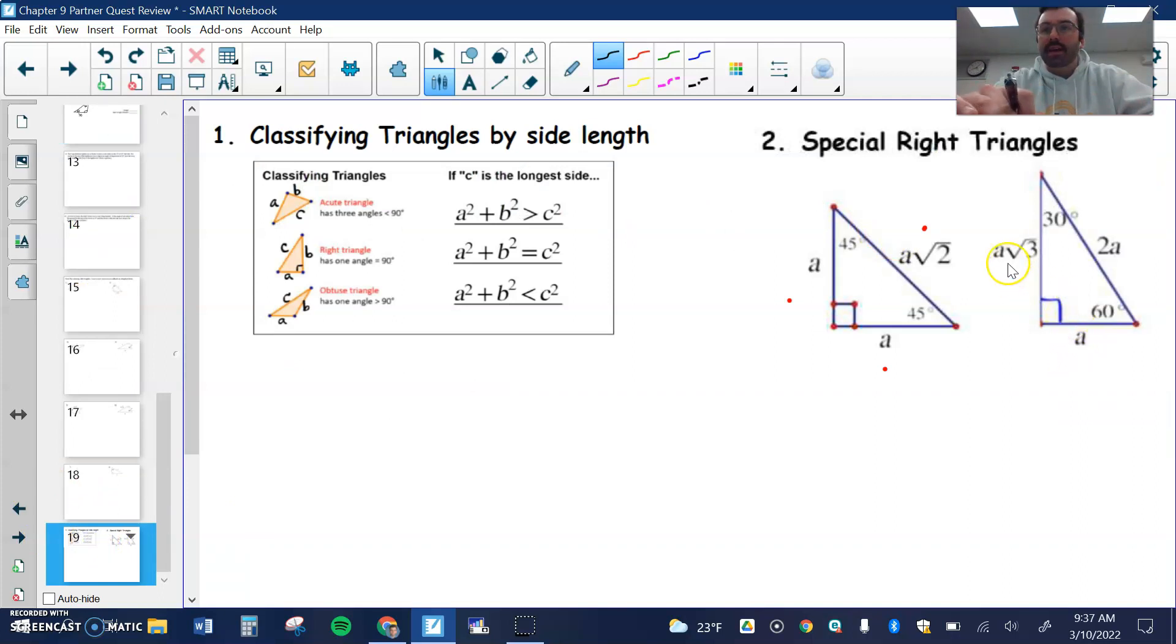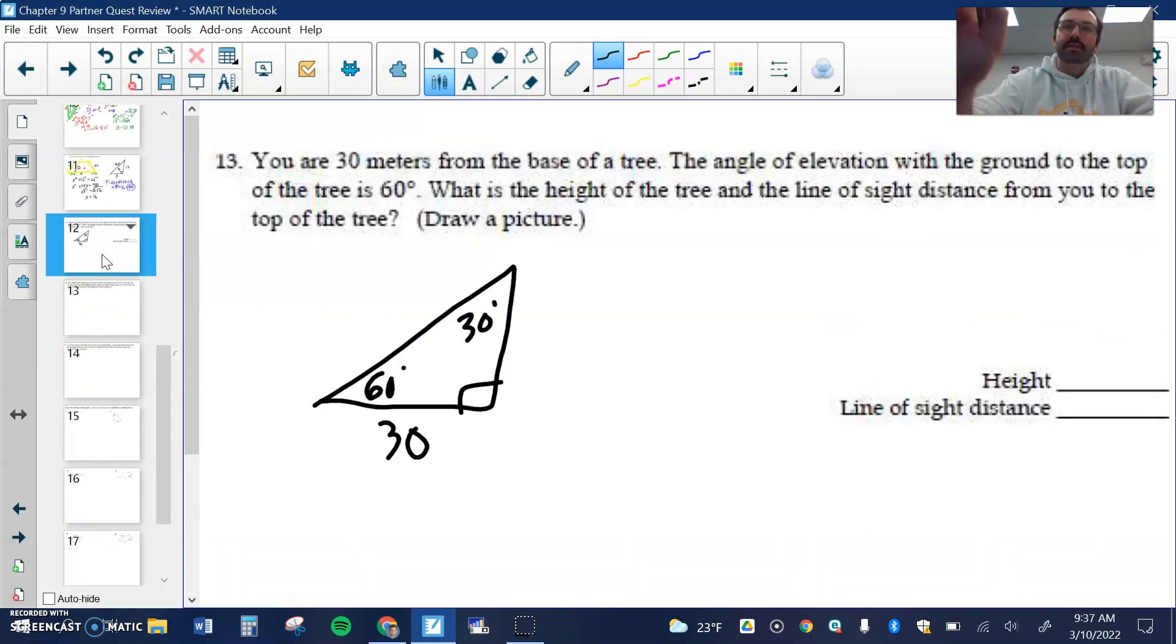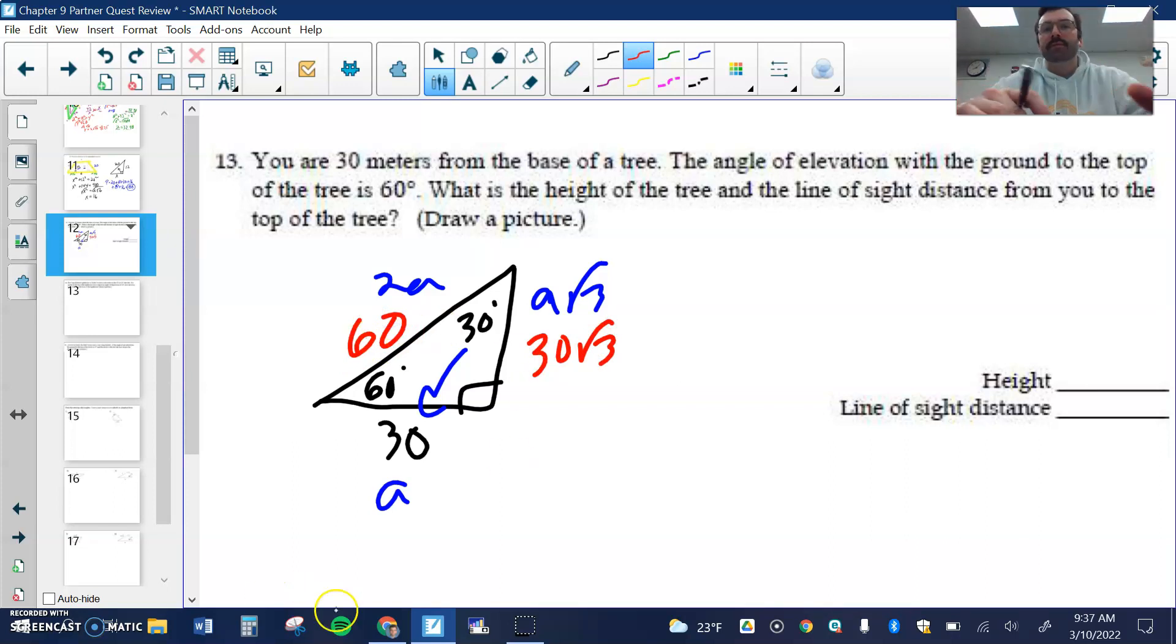30-60-90 remember is a, a root 3, and 2a. For us, this is our a. That means this side will be 30 root 3 and this side will be 60. a is 30. The height of the tree, the straight line distance, is 60 meters.